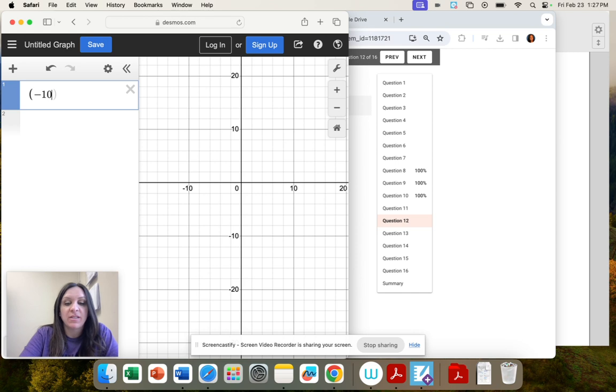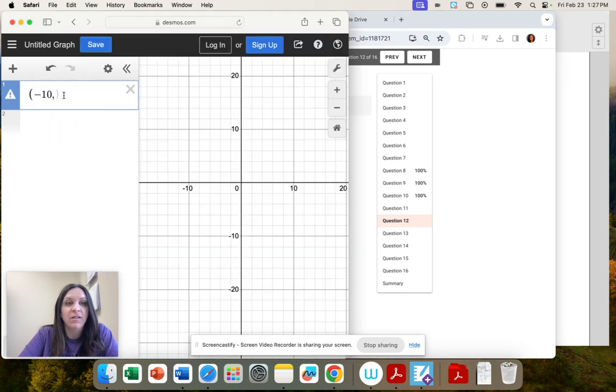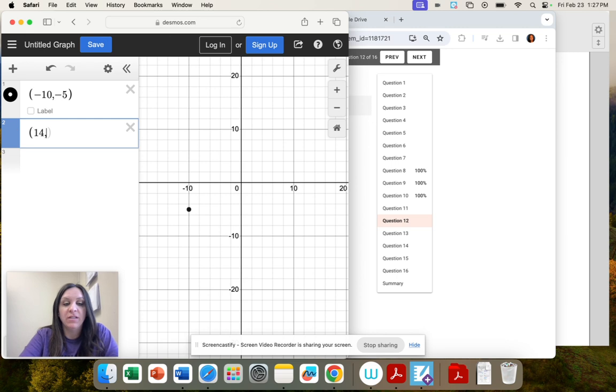So we have two points, negative 10, negative 5, and 14, 13. So these are the endpoints.